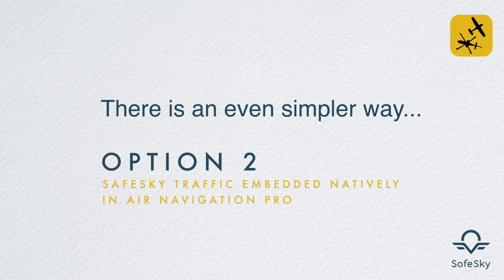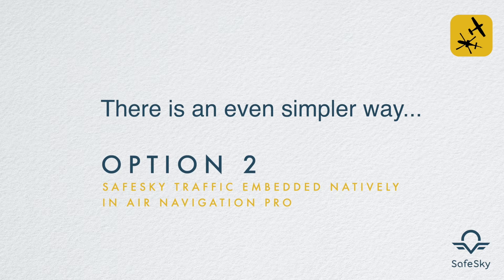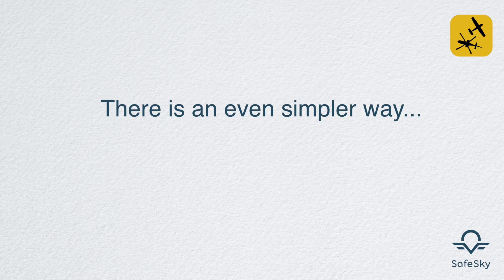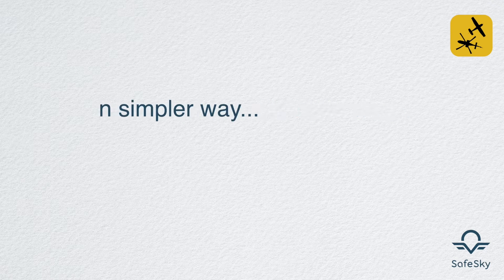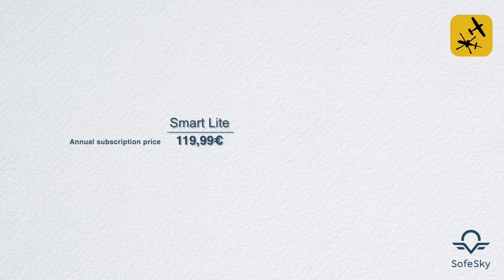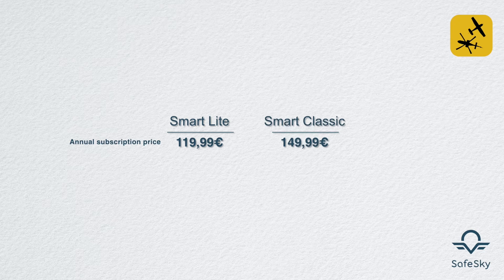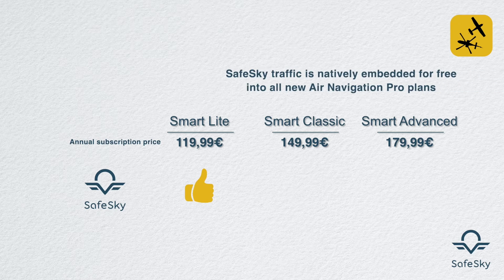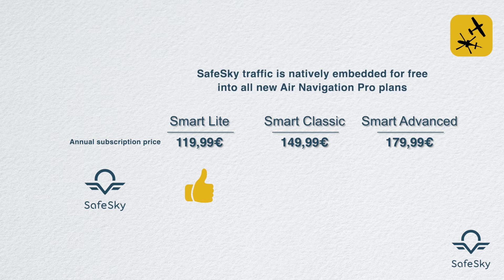There is an even simpler way: Option Two. Air Navigation Pro, in close collaboration with SafeSky, has developed native traffic integration in its navigation application, without you having to use SafeSky for data transfer. To benefit from this native integration, you just need to choose one of the three new Air Navigation Pro subscriptions. SafeSky is natively integrated into these three plans, which is a major step forward for all users.